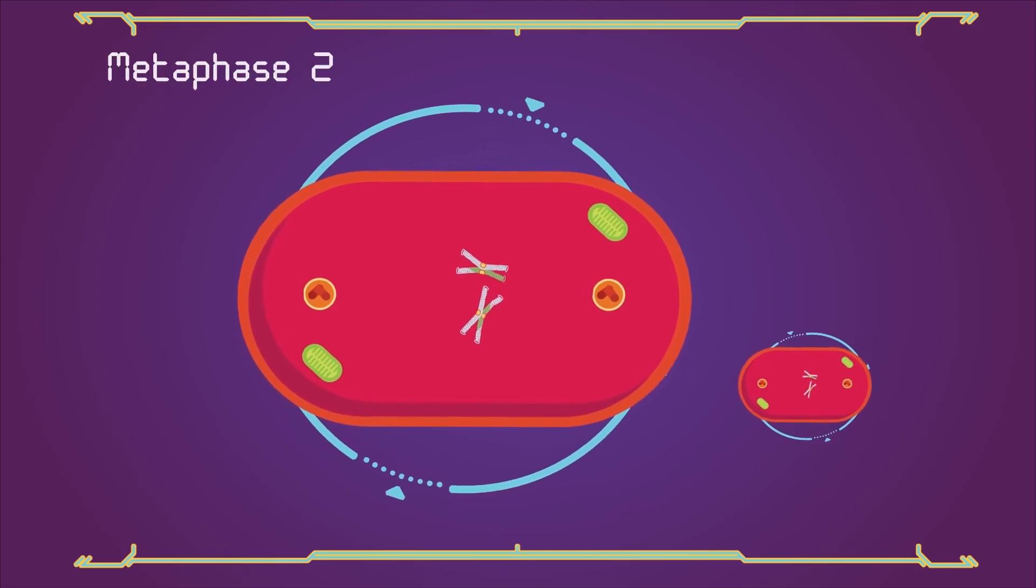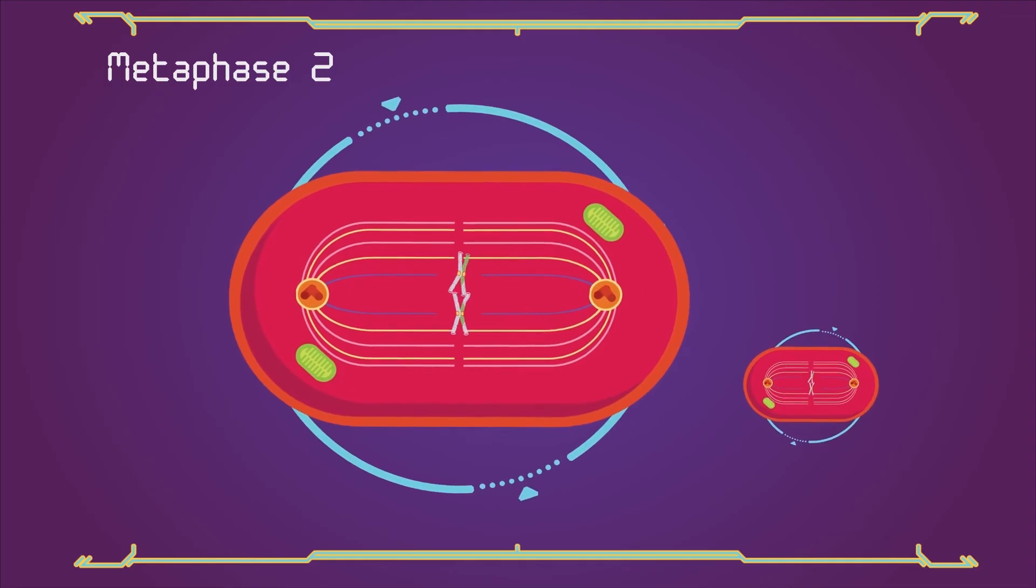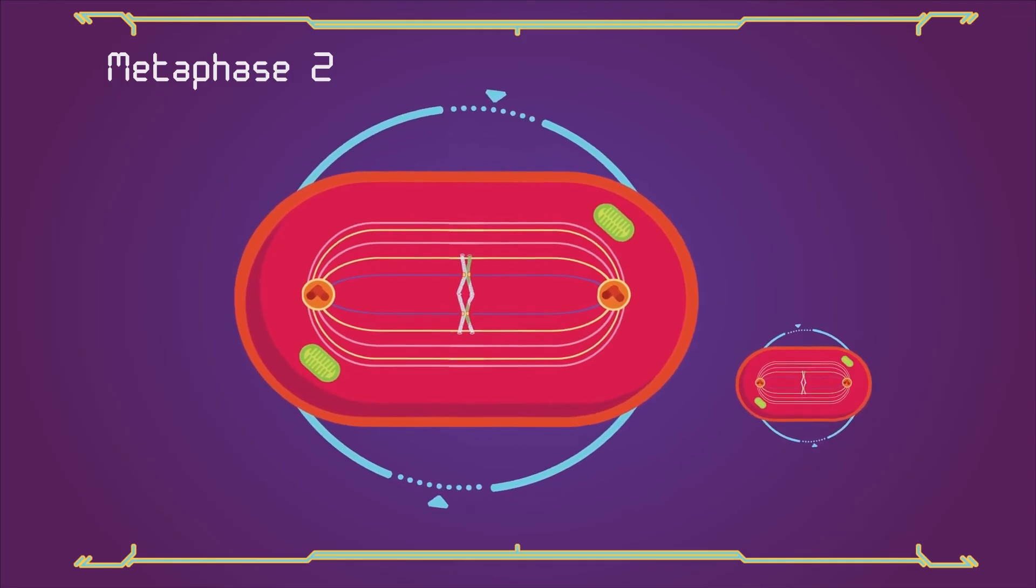In metaphase 2, the centromeres contain two kinetochores that attach to spindle fibres from the centrosomes at opposite poles.